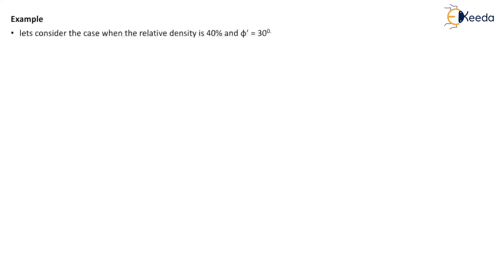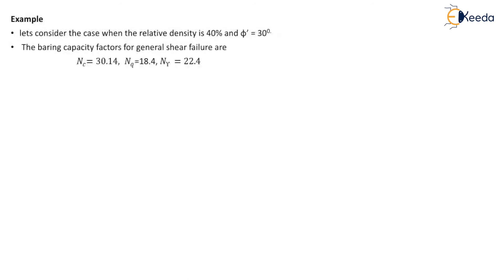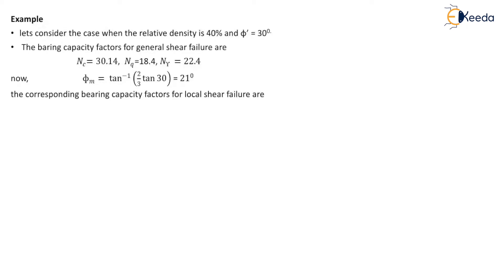For example, consider the case when the relative density is 40%, which is between 20% and 70%. φ' = 30°. The bearing capacity factors for general shear failure are: Nc = 30.14, Nq = 18.4, and Nγ = 22.4. Then φm = tan⁻¹(2/3 · tan 30°) = 21°. Using φm = 21°, the bearing capacity factors for local shear failure are: N'c = 16.01, N'q = 7.25, and N'γ = 6.49.